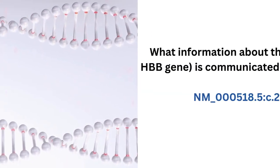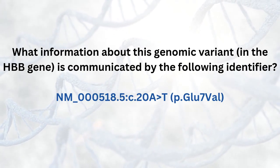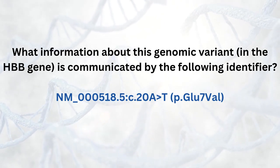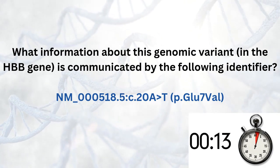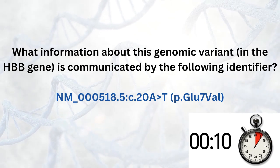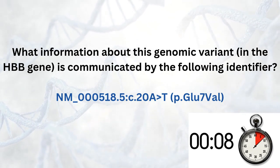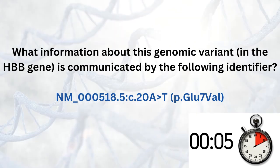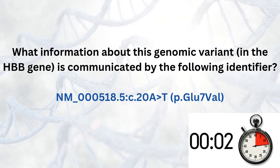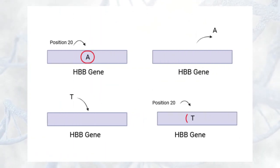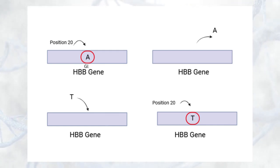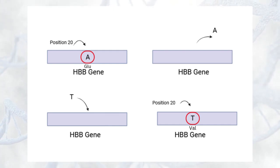What information about the genomic variant is communicated by the following identifier? This variant is a substitution of an adenine with a thymine at position 20 of the HBB gene, which causes the glutamine amino acid at position 7 of the protein to be replaced by a valine.